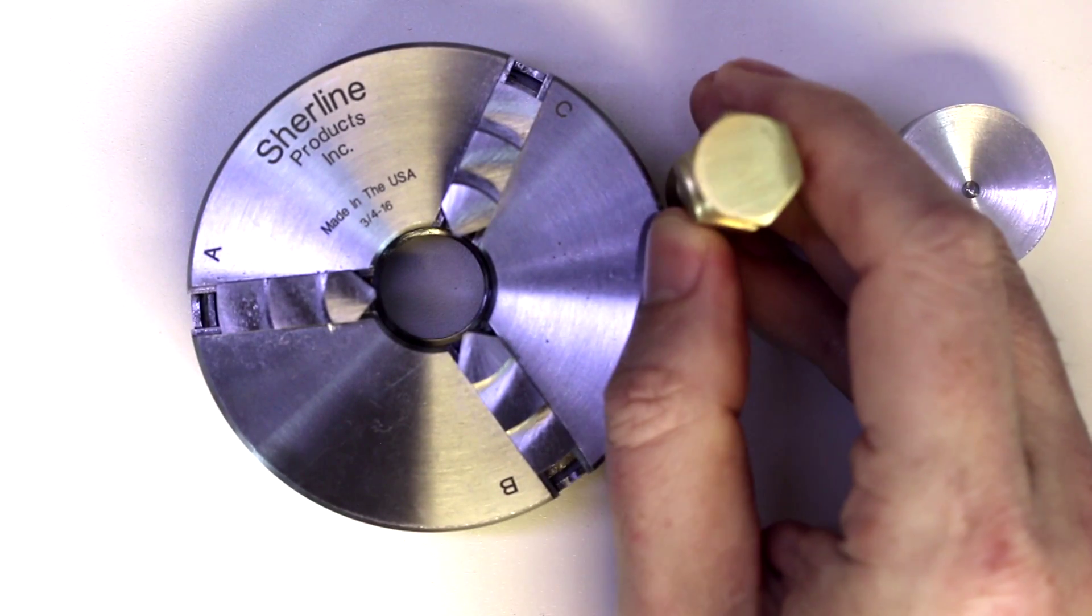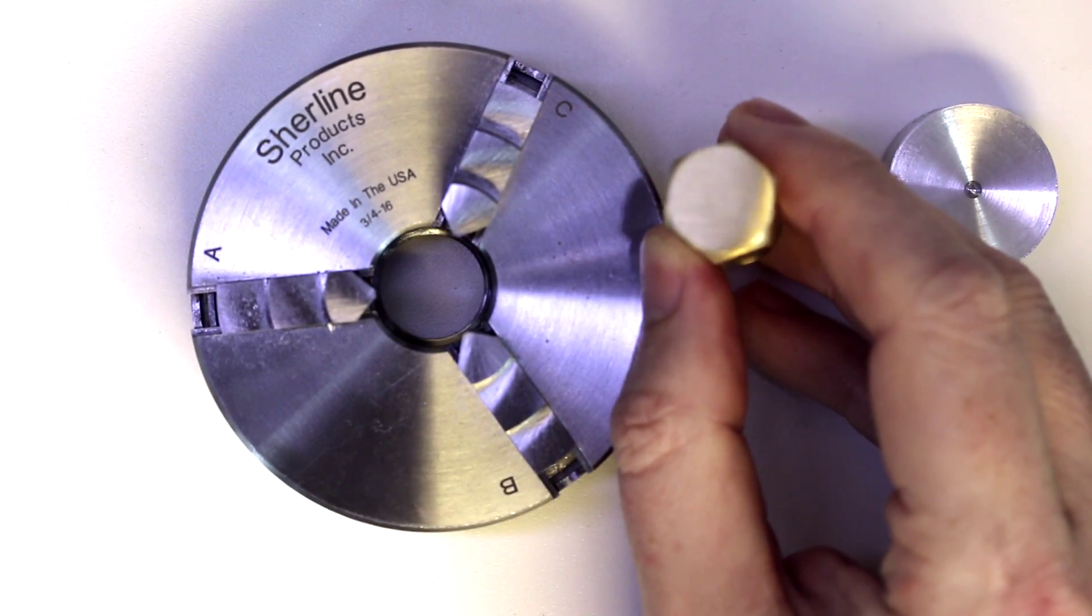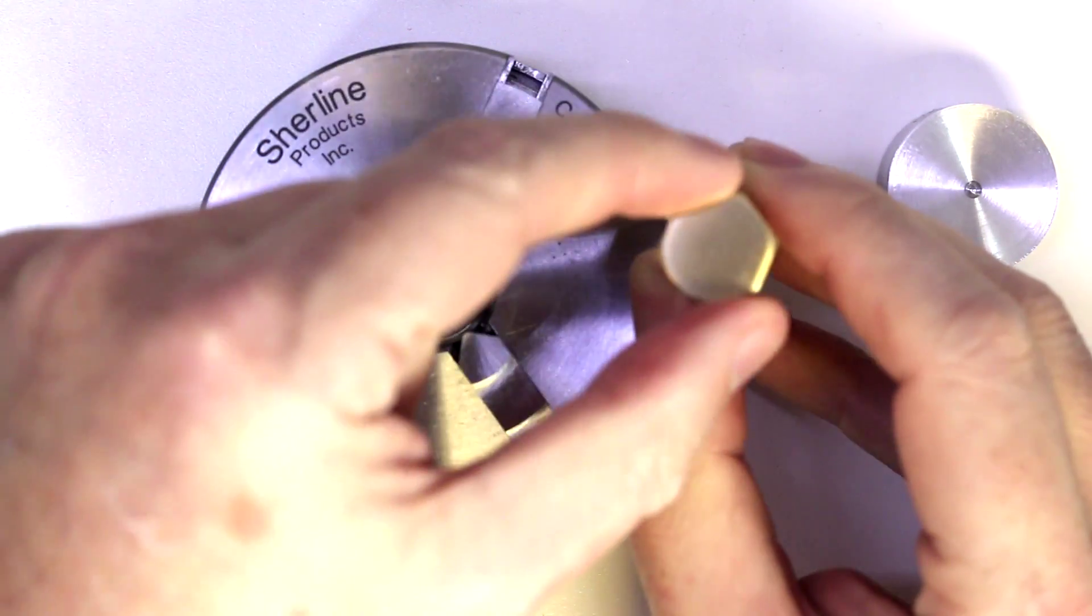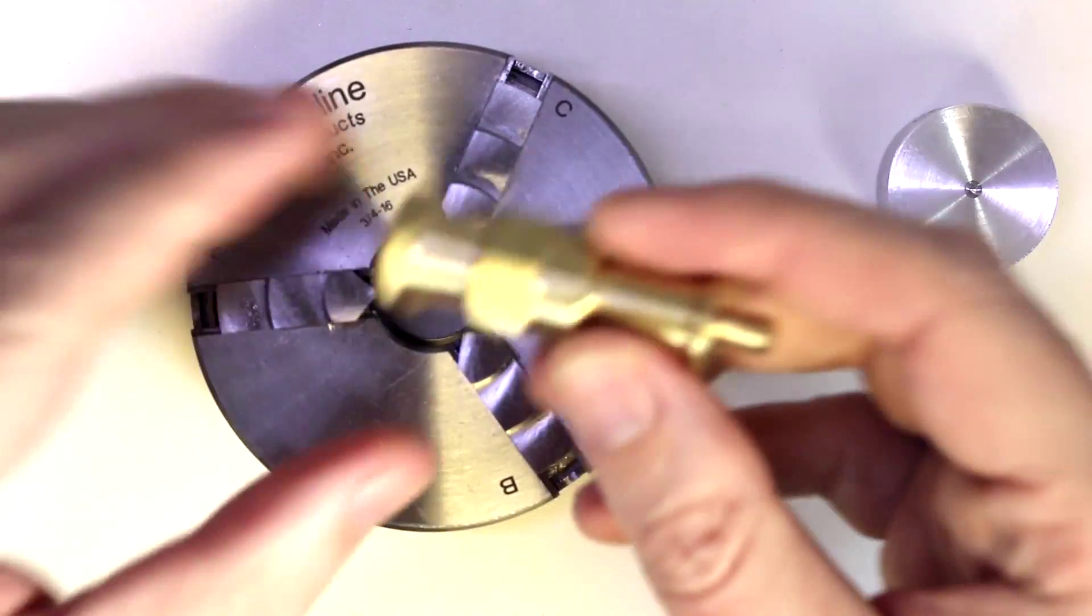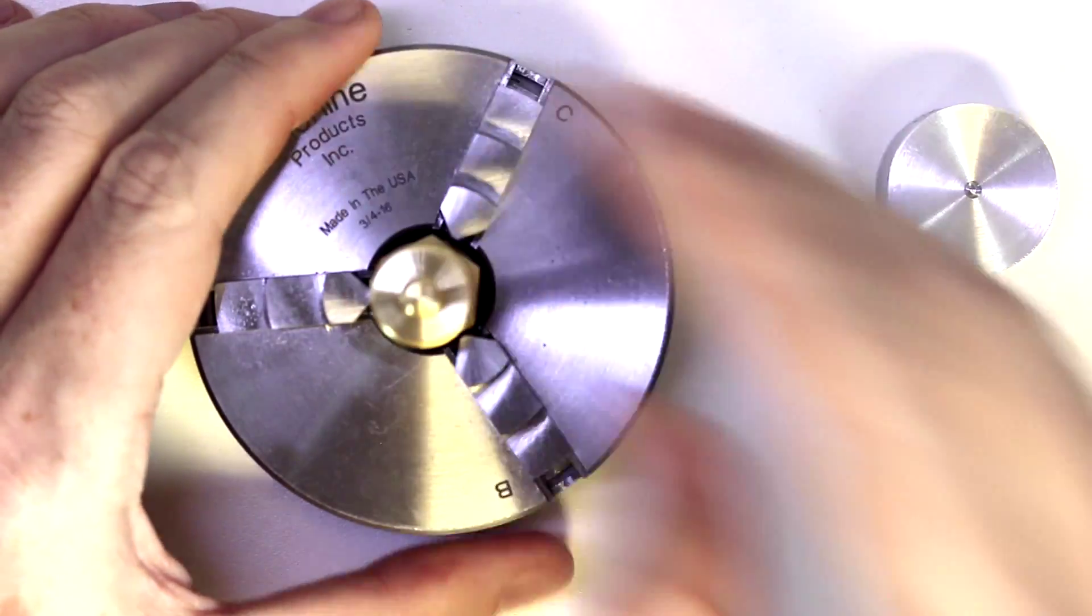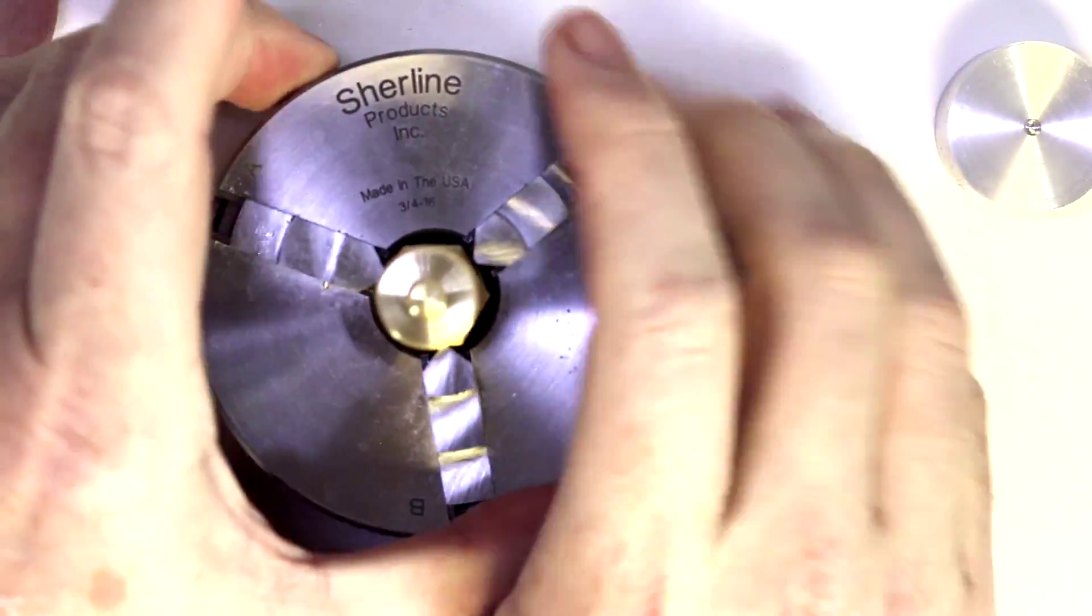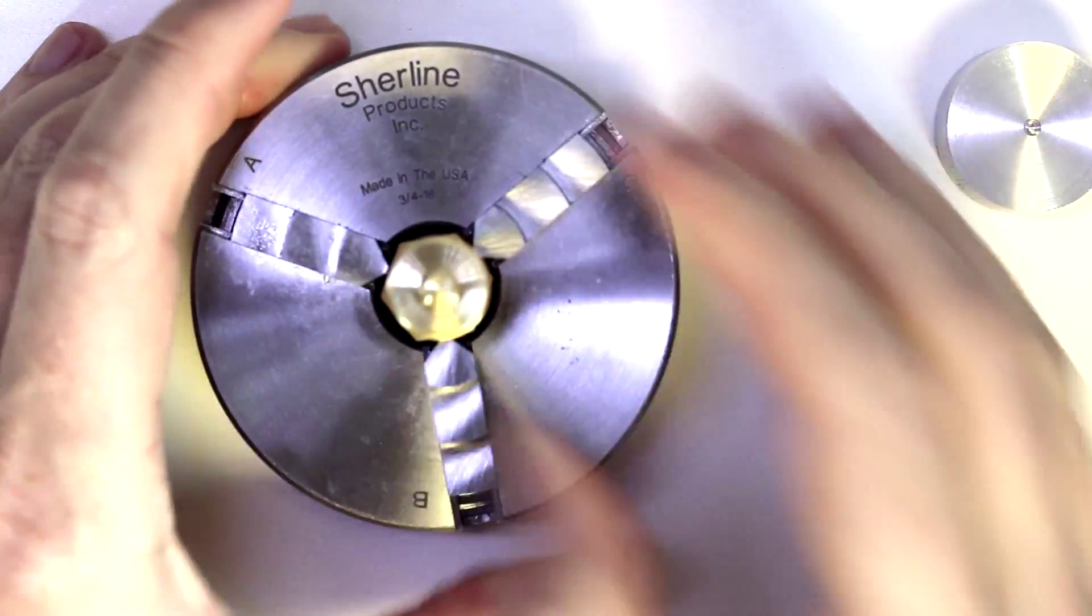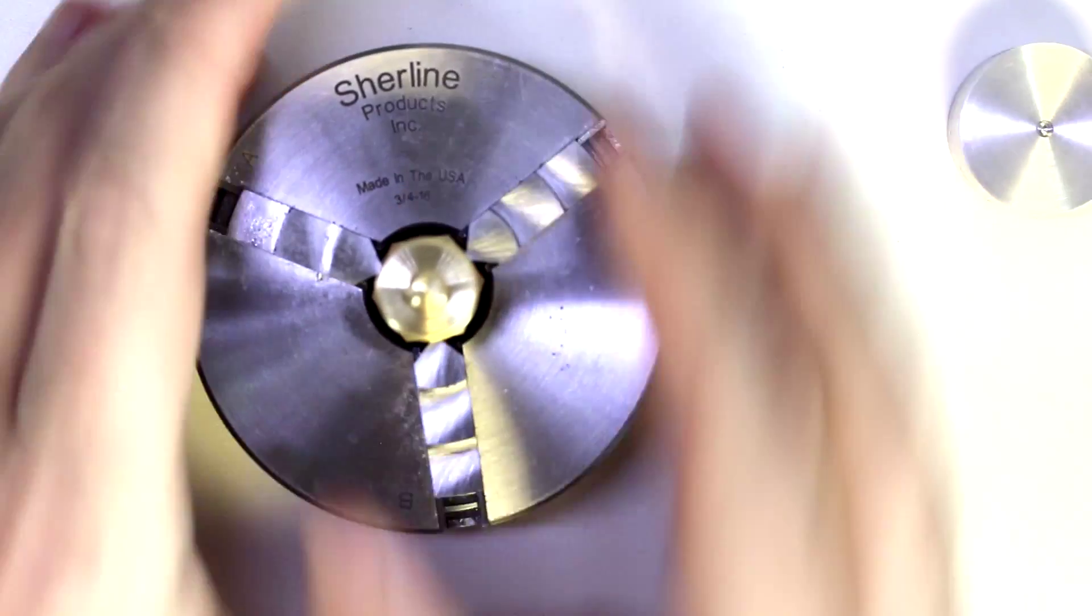So the other shape these are really good at holding are hexagonal shaped pieces. So a six-sided hex piece as we have here, just a small camera device that we can fit into there, and then we can tighten those three jaws up on it and hold it securely once we get it properly centered.